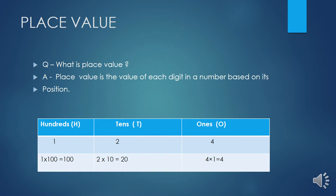For example, one hundred twenty four. Four, four ones place pe hai, to jo bhi digit ones place pe ho, wo ones se multiply ho. Four multiply one is equal to four. Tens — two tens place pe hai, aur tens place pe jo bhi digit ho, wo tens se multiply ho. Two multiply by ten is equal to twenty.